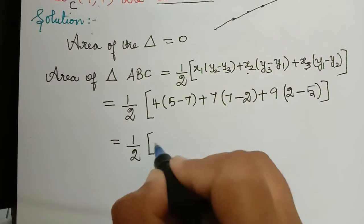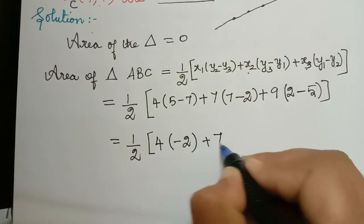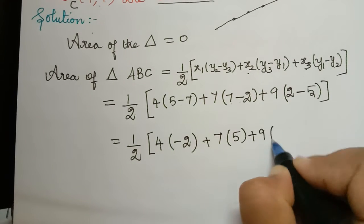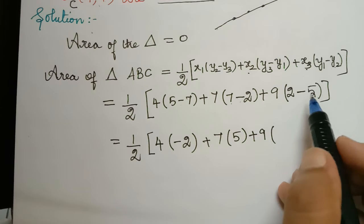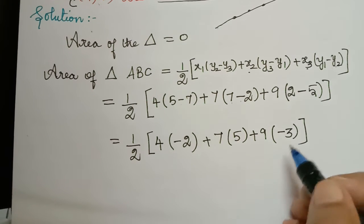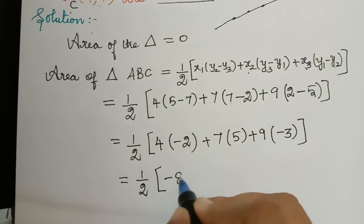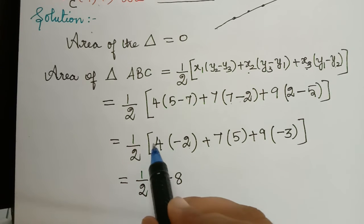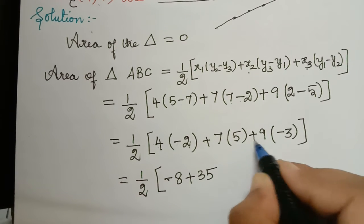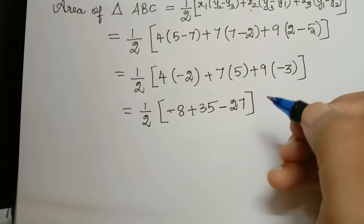Let us simplify this. So one-half multiplied with: 4 multiplied with (5 minus 7), which is negative 2; plus 7 multiplied with (7 minus 2), which is 5; plus 9 multiplied with (2 minus 5), which is negative 3. That gives us one-half multiplied with: (4 times negative 2) equals negative 8; plus (7 times 5) equals 35; plus (9 times negative 3), which is negative 27, because positive times negative is negative.